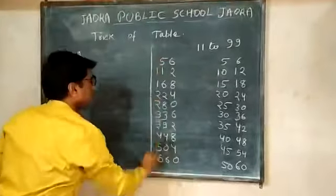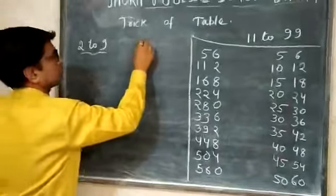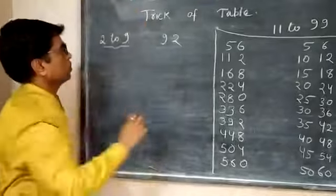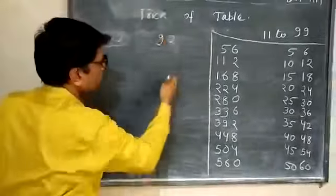Now one more example I will give you. Any big example you can take, and if you want 92, we can take. Table of 92. So what to do here?